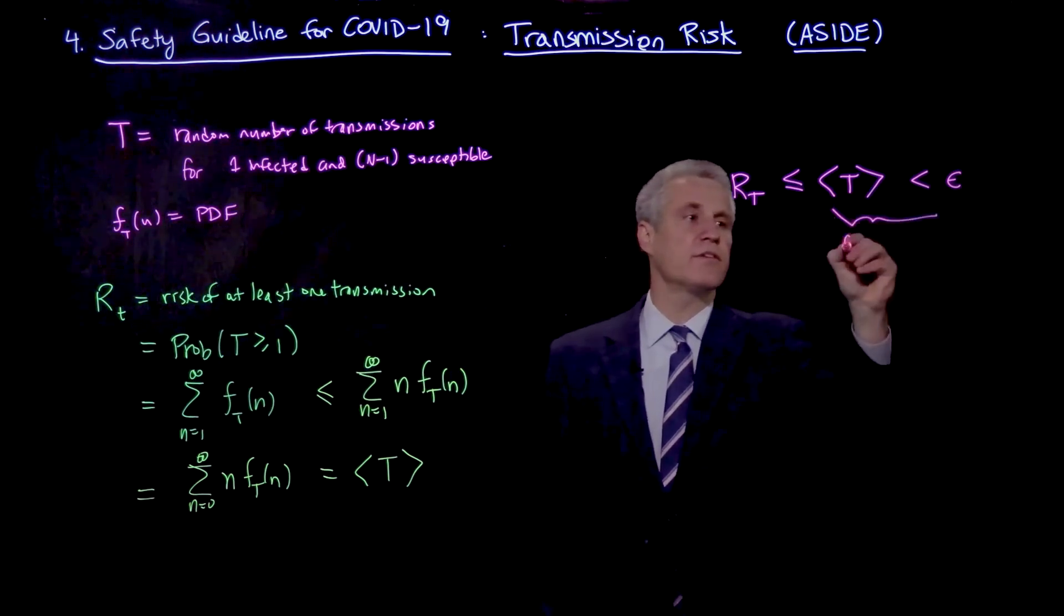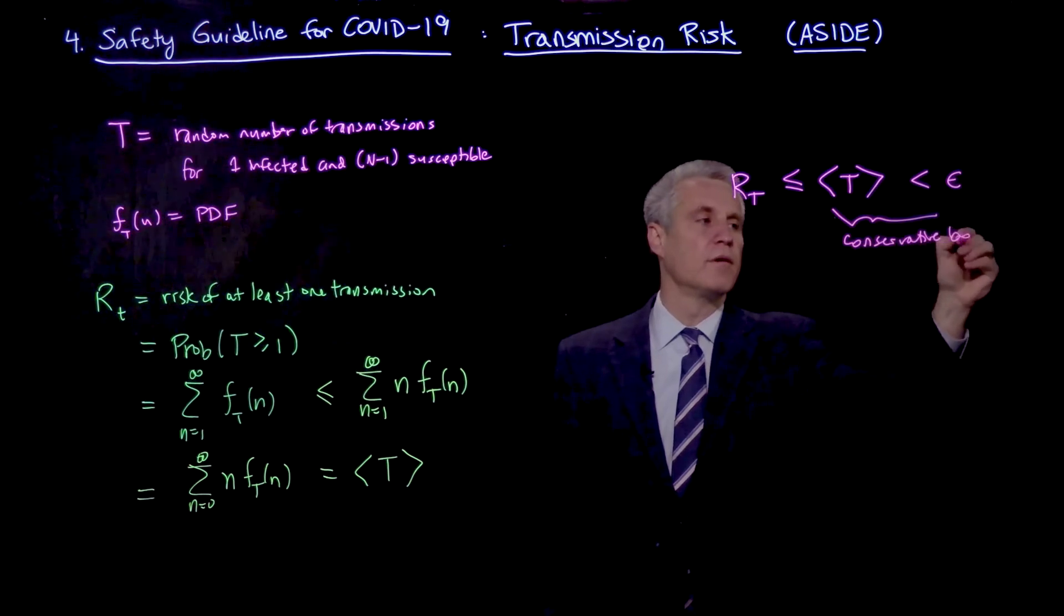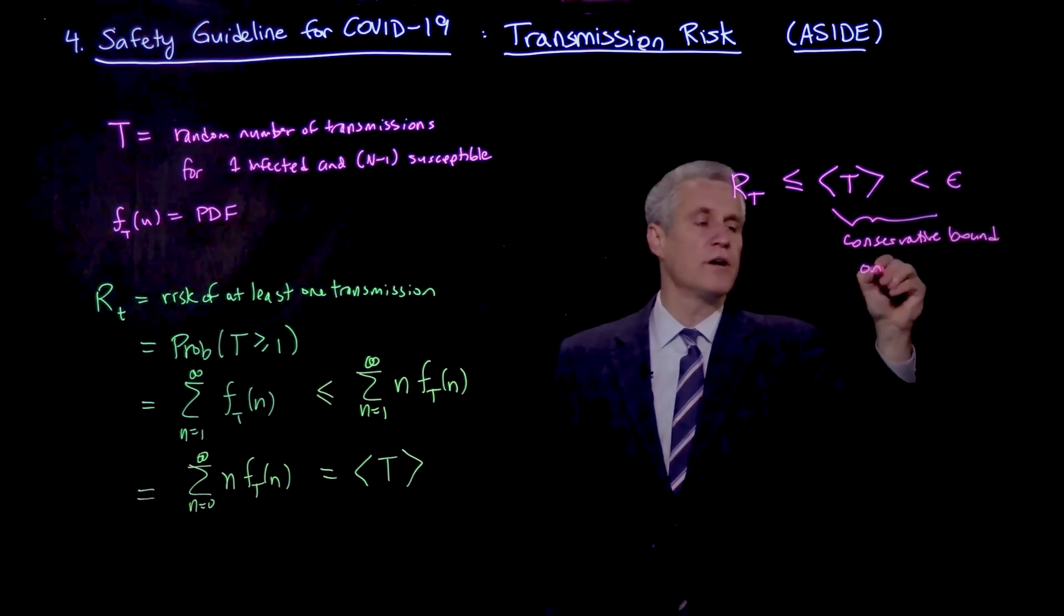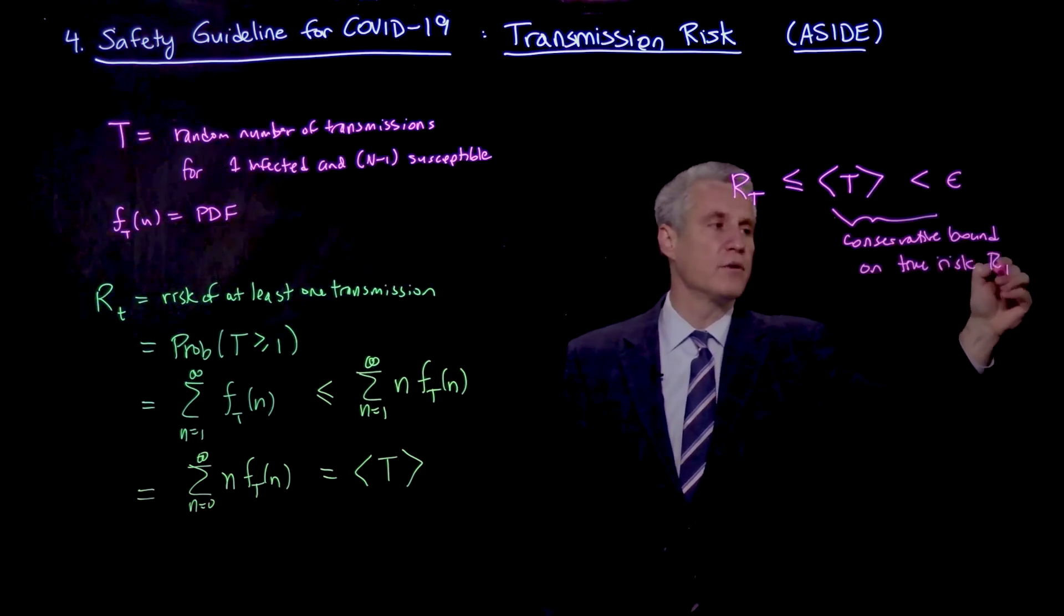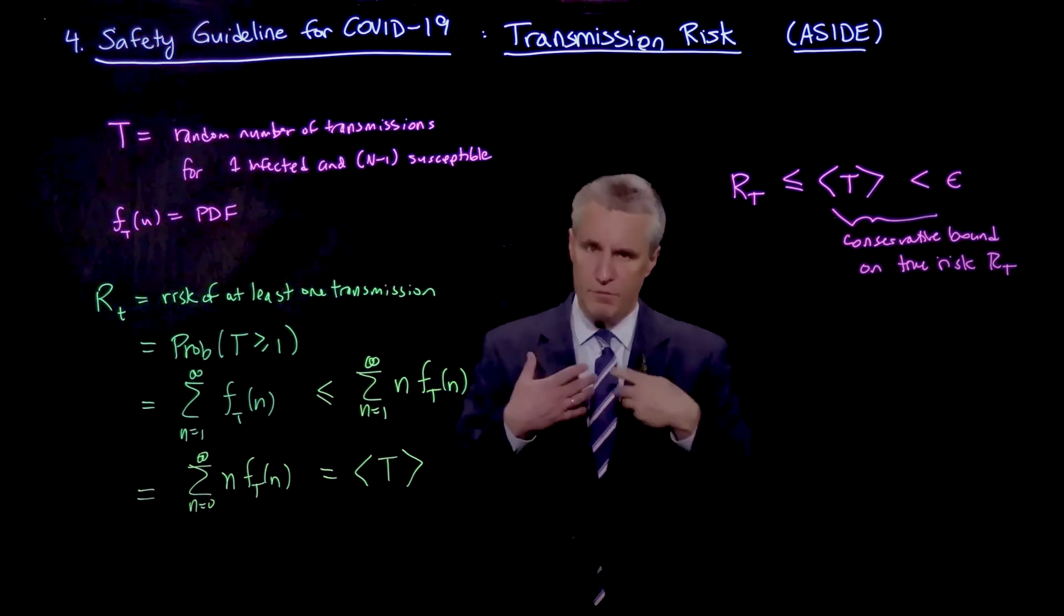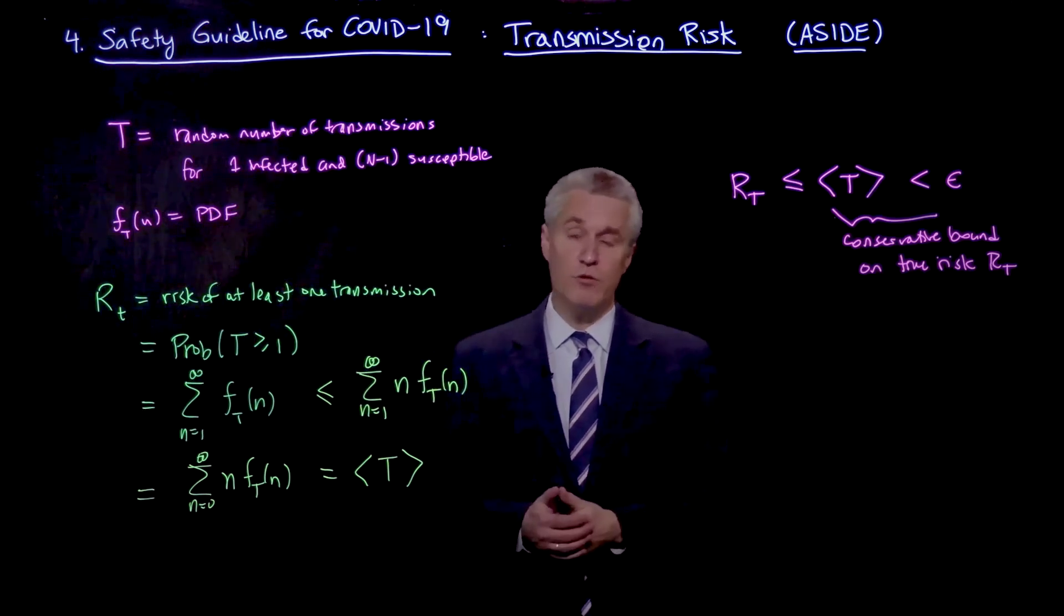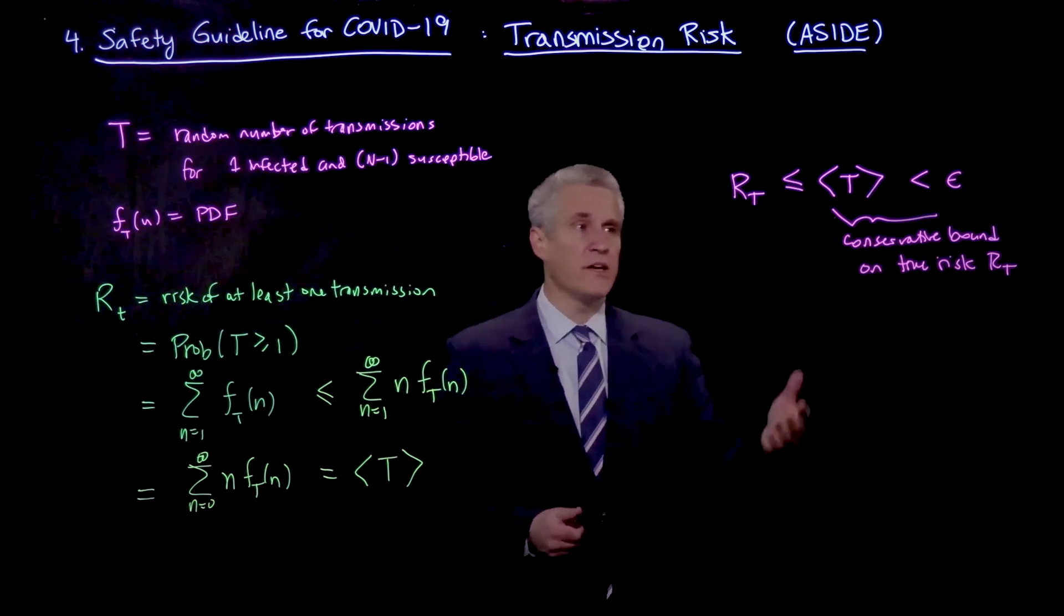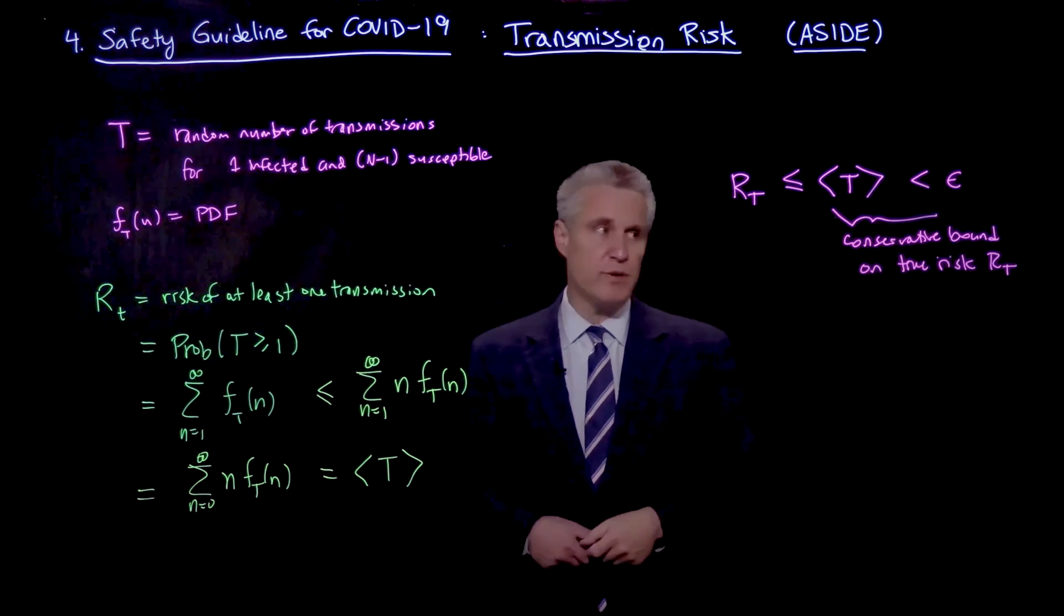this is a conservative bound on the true risk, which is defined by R_T. So if your goal is to control the probability of having at least one transmission, to ensure that no transmissions occur, then you would do well to bound the expected number of transmissions, because that's an upper bound.